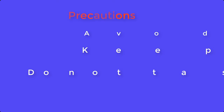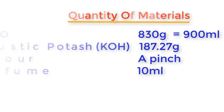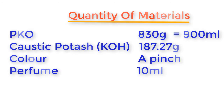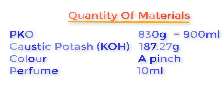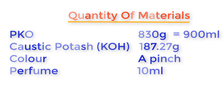Now let's establish the quantity of materials required to produce 2 liters of liquid soap: palm canal oil (also known as PKO) — 830 grams, which is 900 ml; potassium hydroxide — 187.27 grams; color — a pinch; and perfume — 10 ml.